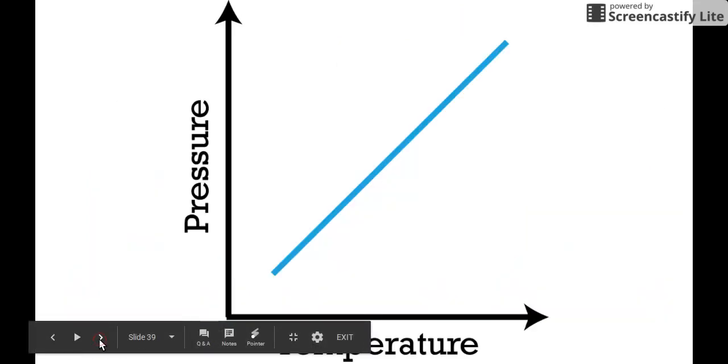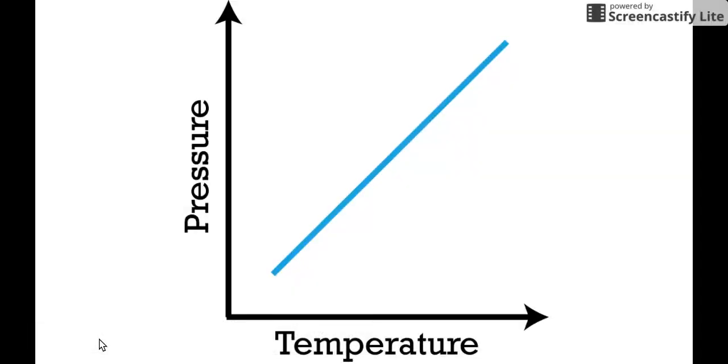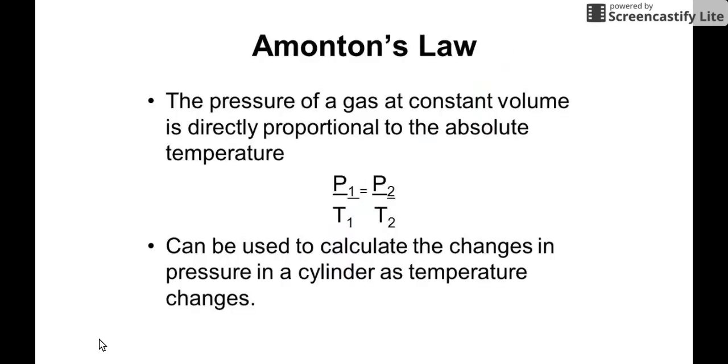If you are to graph a direct relationship, you'll notice it's going to be a straight line graph showing the relationship of pressure and temperature. If you recall a certain law with the same direct relationship, it was the same with Charles's law, which is the volume and temperature direct relationship.